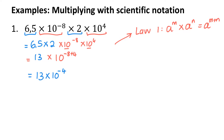Now I'm going to want to write my answer in scientific notation. The way you write things in scientific notation is that you need to have a comma after the first digit. To get from 13 to 1.3, I divided by 10. Scientific notation doesn't change the value of the number, so if I divide the number by 10, to compensate I need to multiply the power by 10. And 10 to the power of negative 4 times 10 gives me 10 to the power of negative 3.